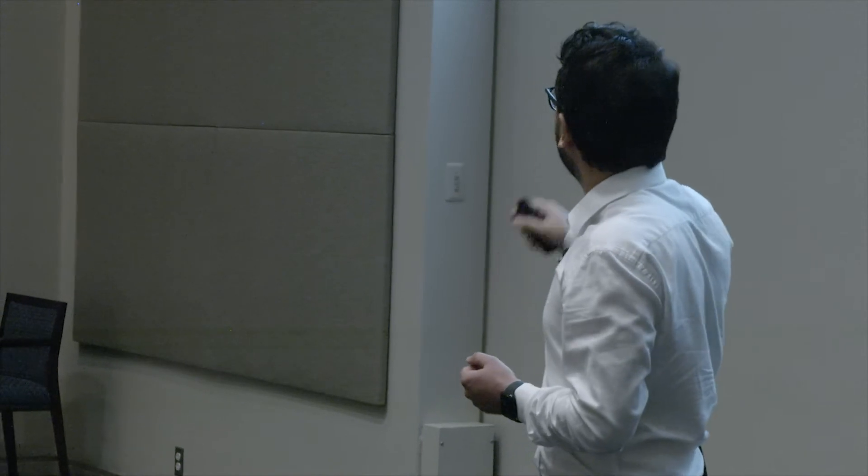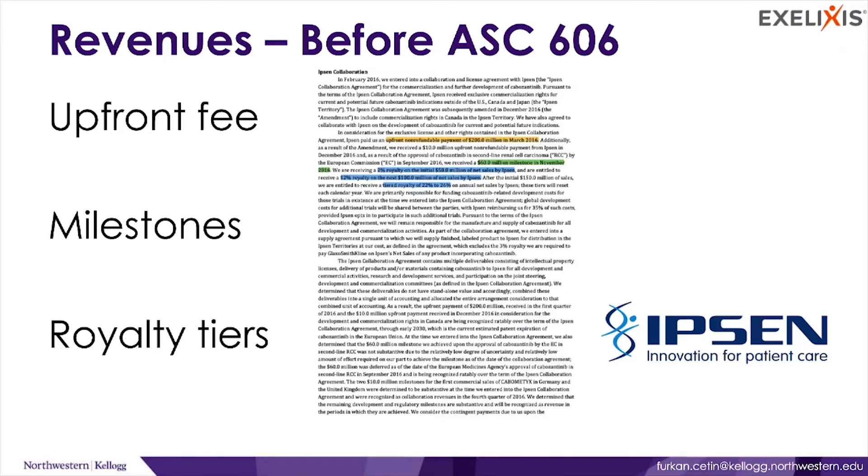But these alliance revenues are complex. For instance, if we look into this Ipsen alliance, we can see that there are terms like upfront fees, milestones, and all these technical terms as highlighted in the text.